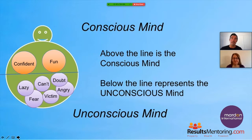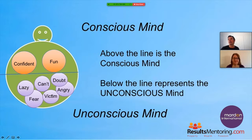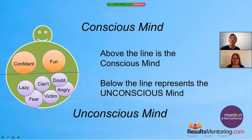Let me briefly explain the diagrams we're going to be using. You'll see a line through the symbol of a person. Above the line you can see a confident sub-personality and a fun sub-personality. Below the line you see doubt, anger, a 'can't' part, a victim part, a fearful part — all these circles represent sub-personalities. The ones above the line means the person is conscious of them; the ones below the line mean the person is unconscious of them, meaning they're operating within their personality or psyche outside of their awareness.